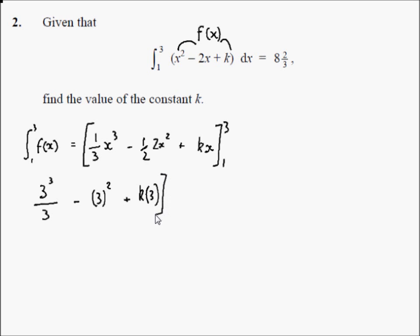Subtract from this f of 1. Now you have 1 cubed over 3 minus 1 squared plus k times 1.